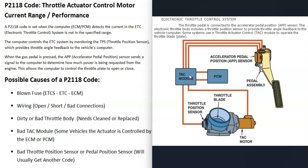The computer controls a small motor built into the throttle body, opening and shutting the throttle plate depending on how much the gas pedal has been pressed. It uses a throttle position sensor to always know the exact location of that plate. When you get a P2118 code, the computer is seeing some kind of problem with the current going to the electronic throttle control system.